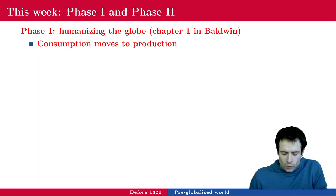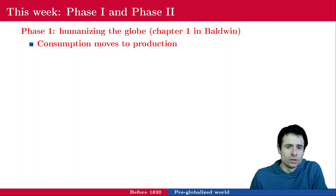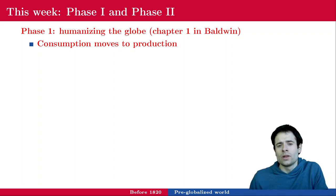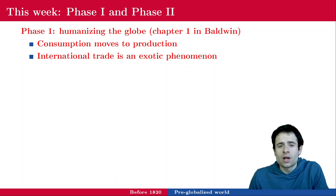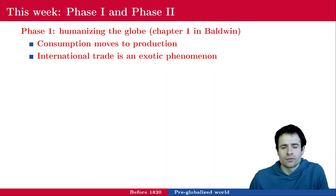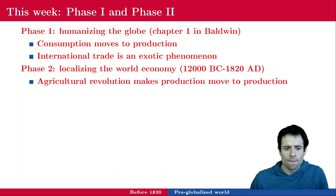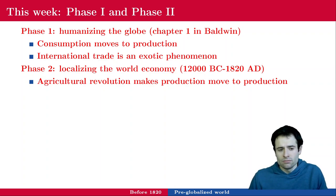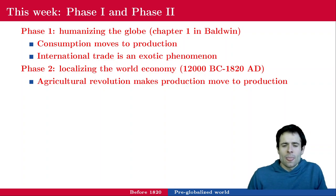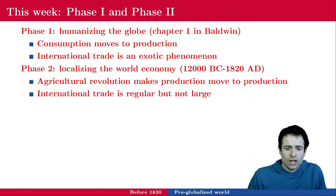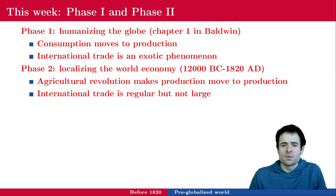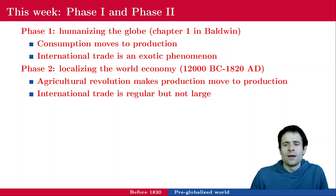Typically, a group of people — usually hunters and gatherers — would go from one place to another where there is food, where there are animals, fruits, and other resources. International trade is a very exotic phenomenon, in particular because there are no tools to ship goods from one location to another. In the second phase, from 12,000 BC until 1820, the agricultural revolution makes production move to consumption. International trade again is regular but not very large, because shipping a good from one location to another is still very expensive.